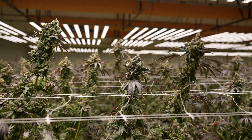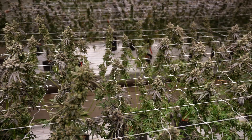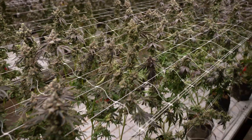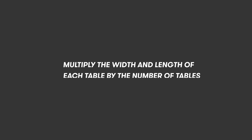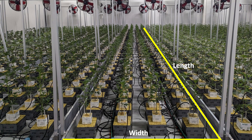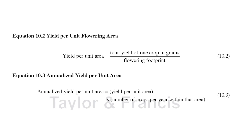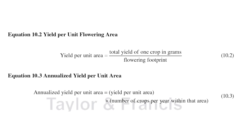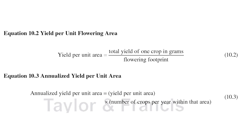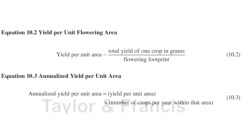To calculate your yield metrics more accurately, you need to start by knowing your canopy area. First, you multiply the width and length of each one of your tables, then multiply this by the number of tables to get the canopy area of each room. Once you have your total harvest in grams or pounds, you divide this total weight by the number of square meters in each room.